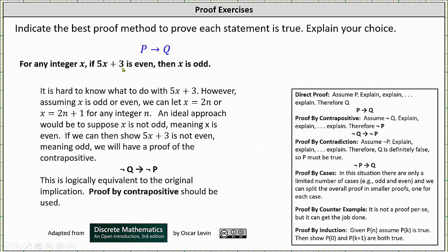It is hard to know what to do with 5x + 3. However, assuming x is odd or even, we can let x = 2n if x is even or x = 2n + 1 if x is odd for any integer n. An ideal approach would be to suppose that x is not odd, meaning x is even. Notice that would be equivalent to not q if the original implication is in the form of if p then q.